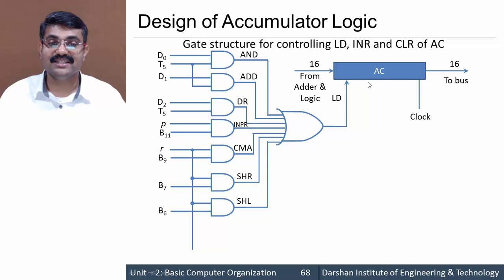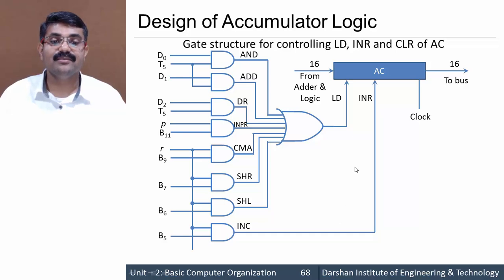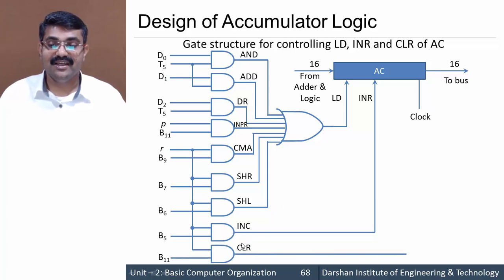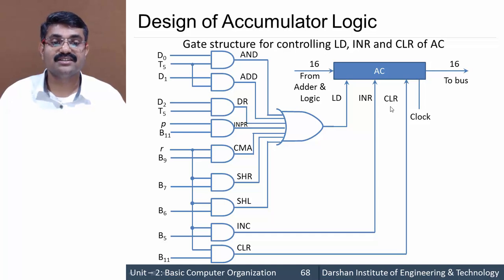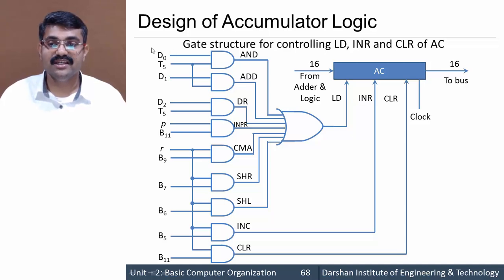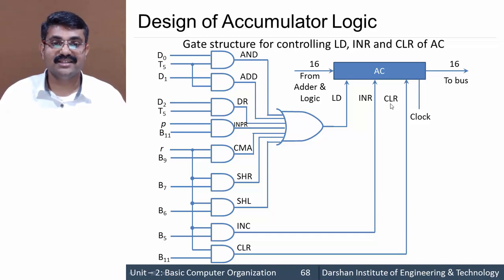We are now left with two signals: increment and clear. Increment occurs at the INC instruction — at time RB5, when the RB5 AND operation is one, increment of AC takes place. Lastly, at time RB11, the accumulator is cleared, and the clear signal is given to the accumulator's clear input. When any of these signals becomes one, the accumulator is affected via load, increment, or clear. This completes the design of accumulator logic.